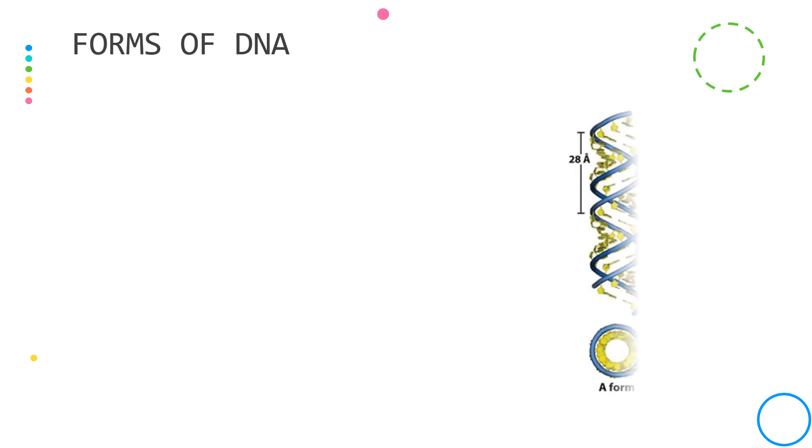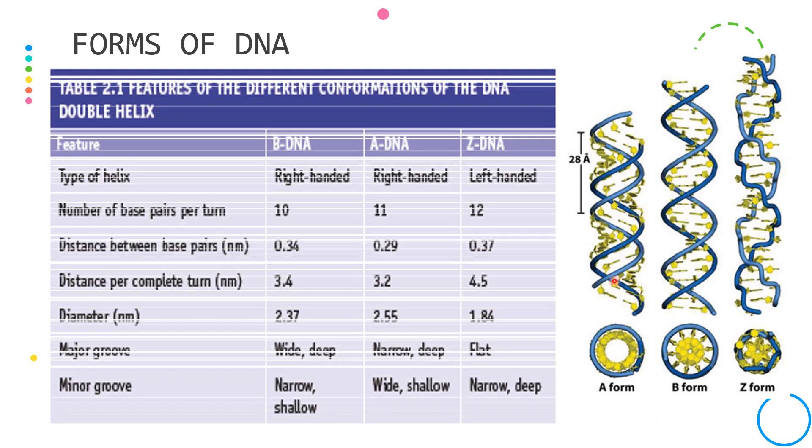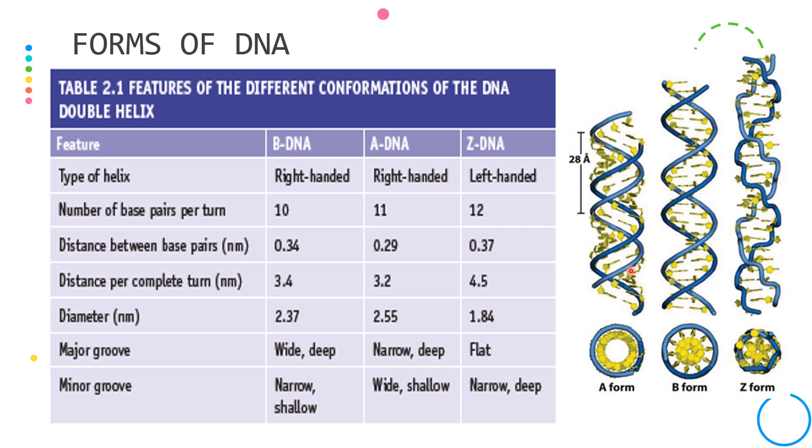There are three forms of DNA. The A form, B form, and the Z form. And among the three, the B form is the most common.